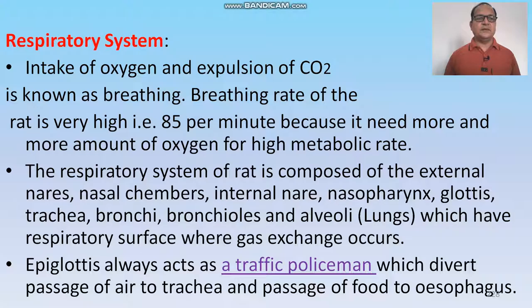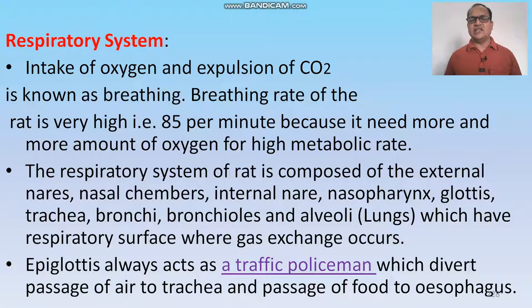The respiratory system: respiration is the intake of oxygen and expulsion of carbon dioxide, known as breathing. The breathing rate is very high — 85 breaths per minute in the rat — because it needs more oxygen for its high metabolic rate. The respiratory system of the rat is composed of: nasal chamber, nasopharynx, glottis, trachea, bronchi, bronchioles, alveoli, and lungs, which have the respiratory surface for gaseous exchange. The epiglottis always acts as a valve that diverts air into the trachea and food into the oesophagus.